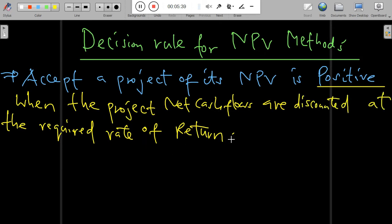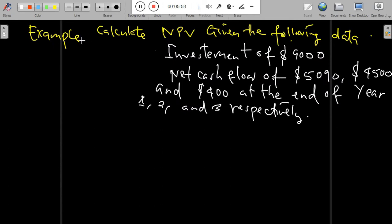If the net present value is negative, we should not accept the project, when the project's net cash flows are discounted at the required rate of return. Let's quickly go to an example.